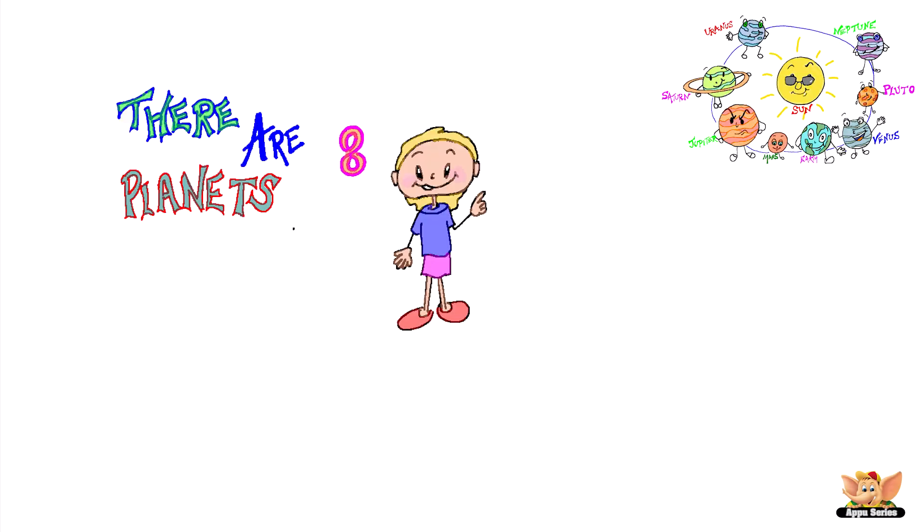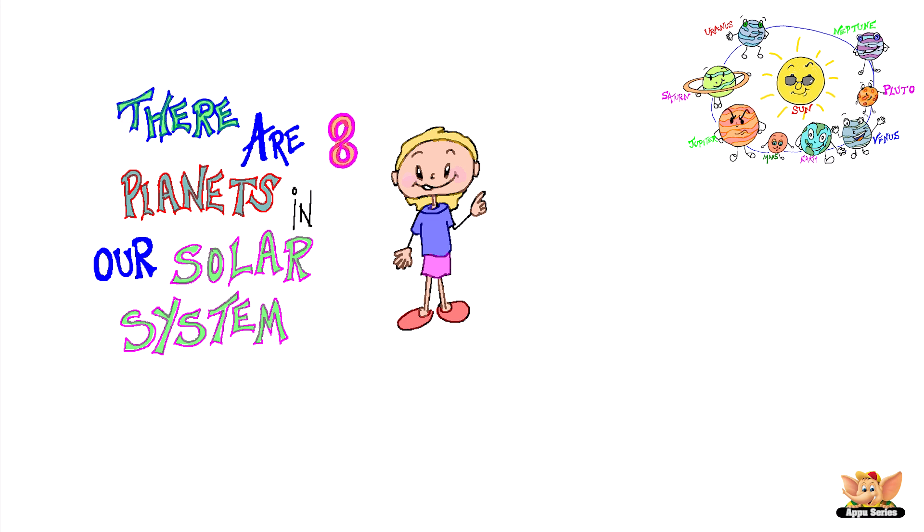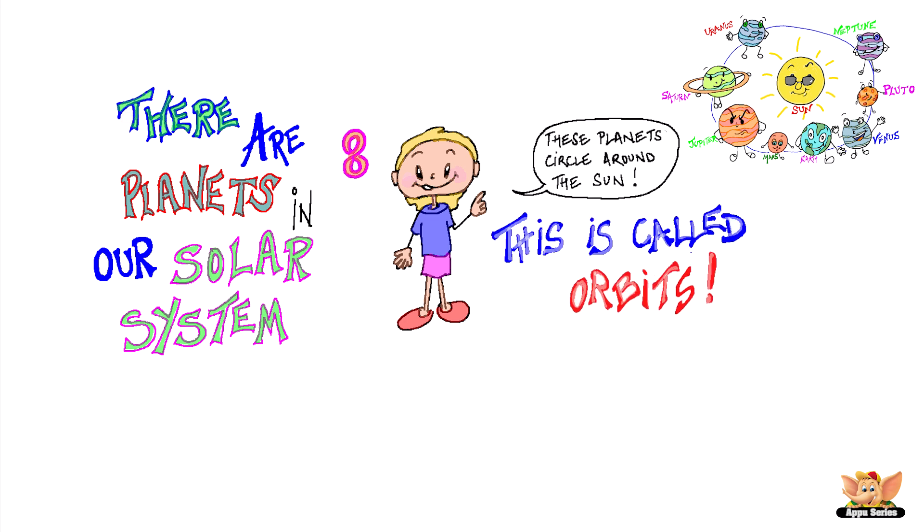There are eight planets in our solar system. These planets circle around the sun. This is called orbits.